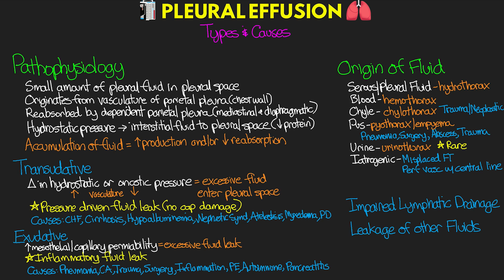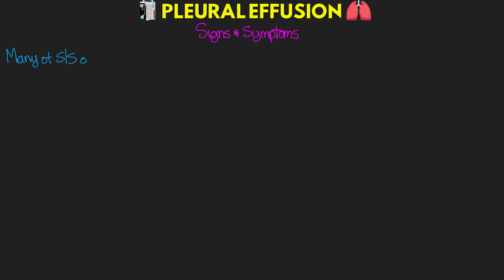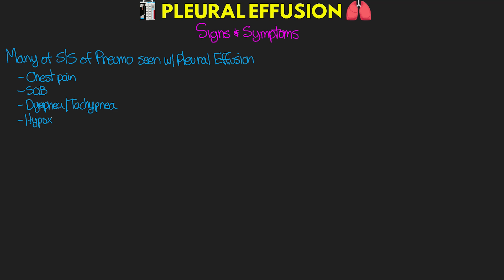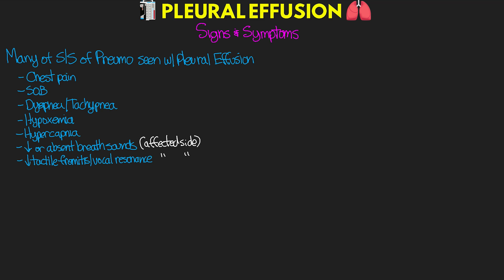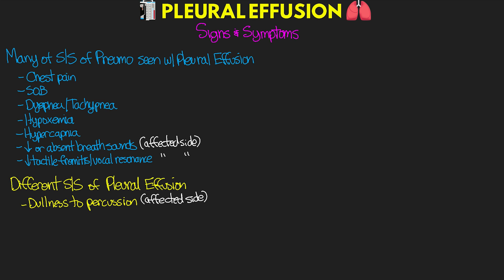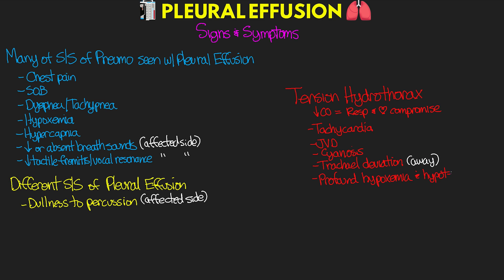Many signs and symptoms of a pleural effusion overlap with a pneumothorax, including chest pain, shortness of breath, dyspnea, tachypnea, hypoxemia, hypercapnia, decreased or absent breath sounds on the affected side, and decreased tactile fremitus and vocal resonance on the affected side. Similar to hemothorax, we also see dullness to percussion on the affected side. A large pleural effusion can lead to tension hydrothorax, causing decreased cardiac output and severe respiratory and cardiac compromise, presenting with tachycardia, JVD, cyanosis, tracheal deviation away from the affected side, profound hypoxemia, hypotension, respiratory failure, and potentially cardiac arrest.